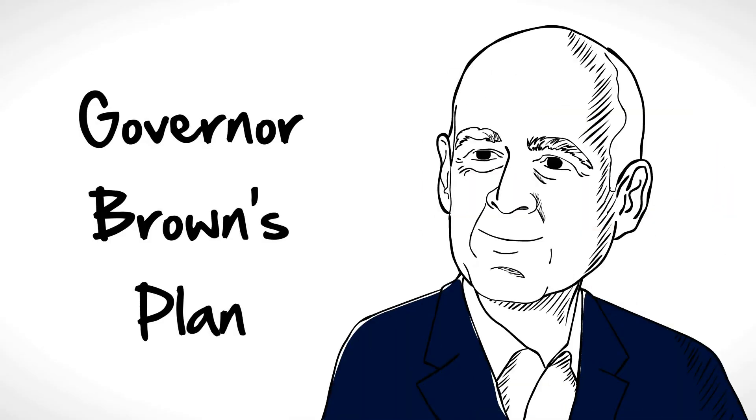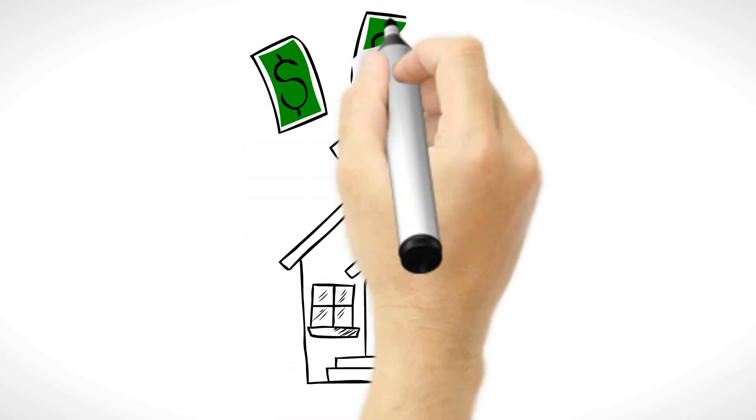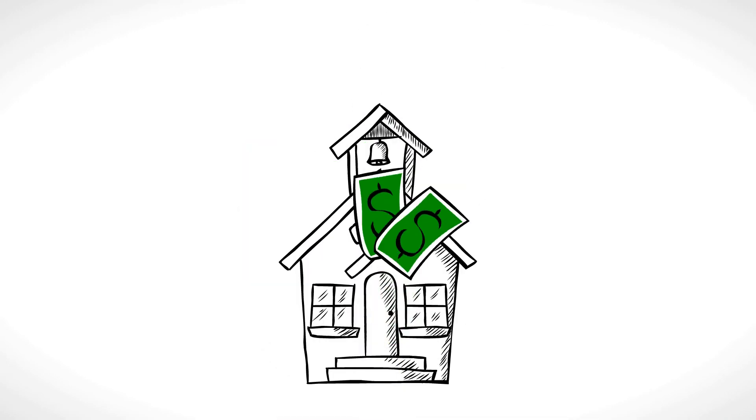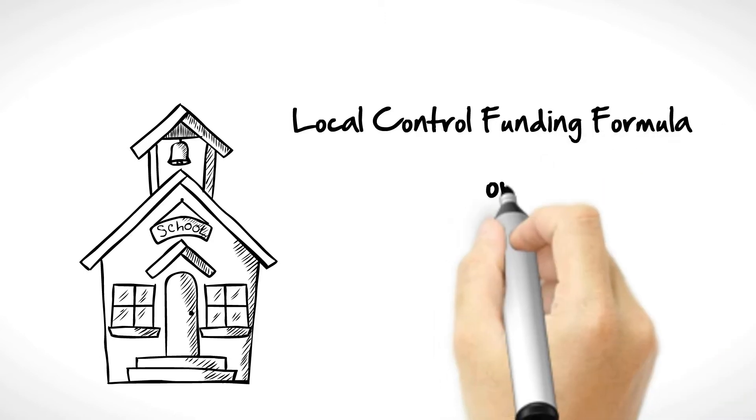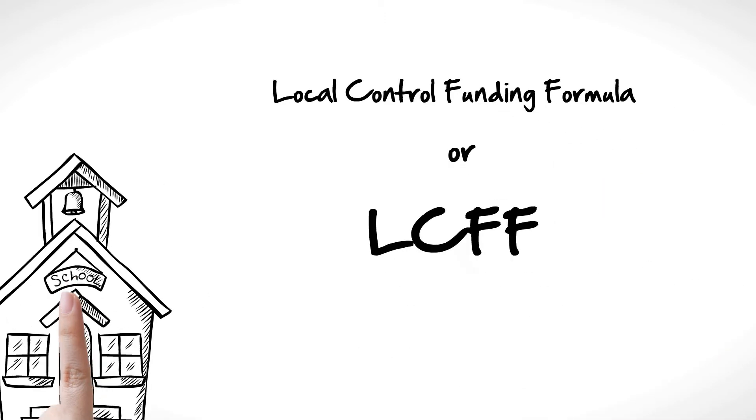The governor has a plan to fix these funding problems. He wants to improve the way we fund schools. The plan is called Local Control Funding Formula, or LCFF. The plan does the following.